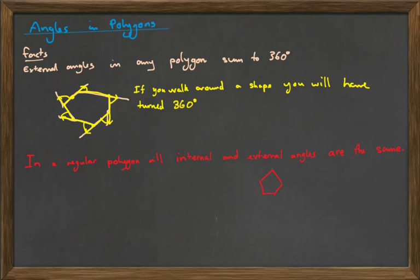Let's look at a regular pentagon. So, in a regular pentagon, all the internal angles are the same. If we look at the external angles, there are five of them. So, that's 360 degrees divided by 5, or 72 degrees. The internal angles, well, we know the external angle is 72 degrees. So, the internal angle must be 108 degrees, or 180 take away 72.